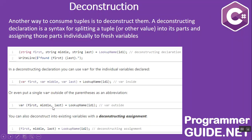You can also deconstruct into existing variables with a deconstructing assignment. If you have already declared first, middle, and last, you can use those variables directly instead of declaring new local variables.